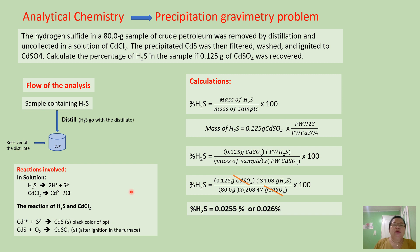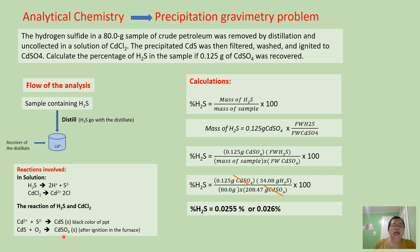When the precipitation reaction is complete, we filter our solution. The purpose of filtration is to separate the cadmium sulfide precipitate from the filtrate. After filtration, we wash the precipitate to eliminate water-soluble substances that co-precipitated with cadmium sulfide. After washing, we ignite the cadmium sulfide precipitate, and it is converted into cadmium sulfate at high temperature.